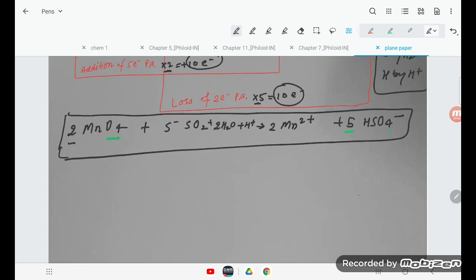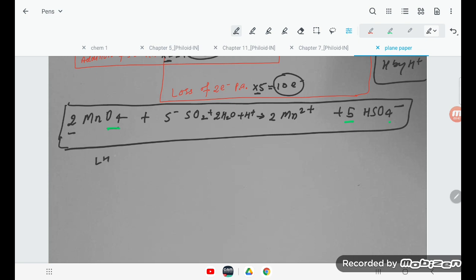Now you check. How can you check the answer? LHS side atoms and RHS side atoms should be equal. So Mn, O, S, H, and charge. How many Mn atoms? 2 this side, 2.